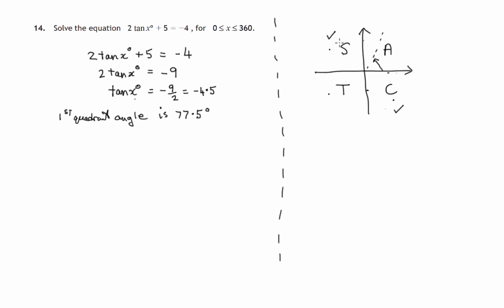So the angle in here, that's the second quadrant, would be all the way around to 180 minus that 77.5. So x is equal to 180 minus 77.5, or the fourth quadrant angle would be all the way around to 360 minus the angle. So that's 360 minus the first quadrant angle of 77.5. So that's 360 minus 77.5 degrees.